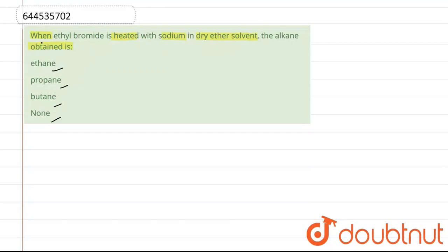Check which of the following alkanes is obtained. So here we have C2H5, that is ethyl bromide, in presence of sodium in dry ether solvent.